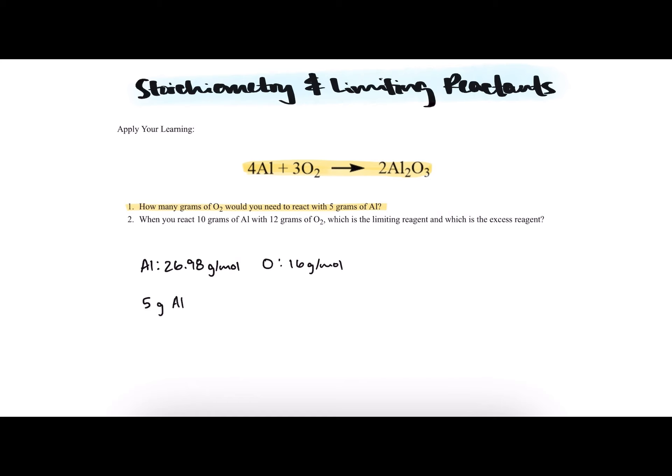So we've started with 5 grams of aluminum. Let's turn that into moles of aluminum first. We can do that by dividing by the molar mass. I've gone ahead and listed out the molar masses of aluminum and oxygen so that we can use them. These were found straight from the periodic table. The molar mass of aluminum is 26.98 grams per mole.